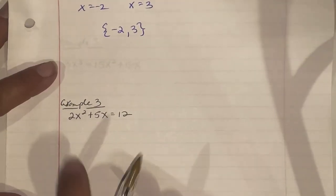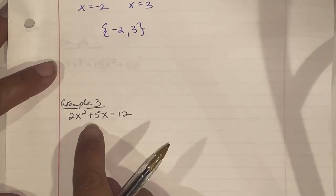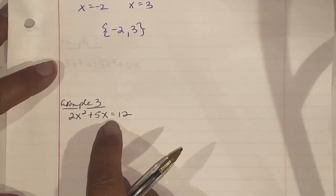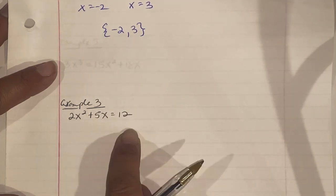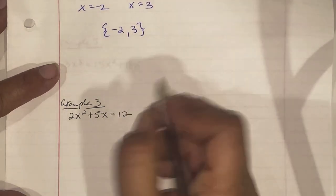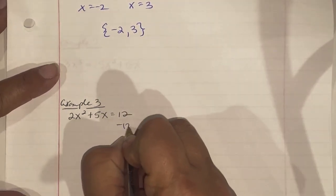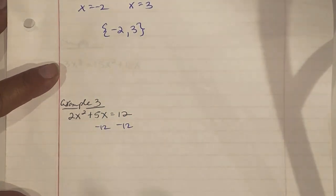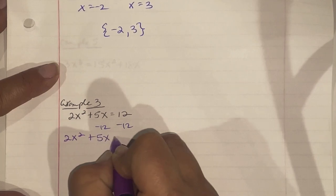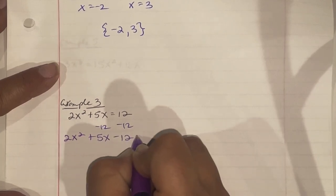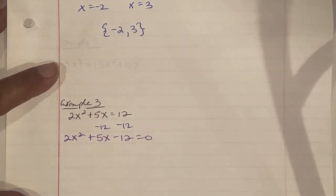Example 3 says 2x² + 5x = 12. The first thing we do is set it equal to zero, so we subtract 12 from both sides. Now we have 2x² + 5x - 12 = 0.